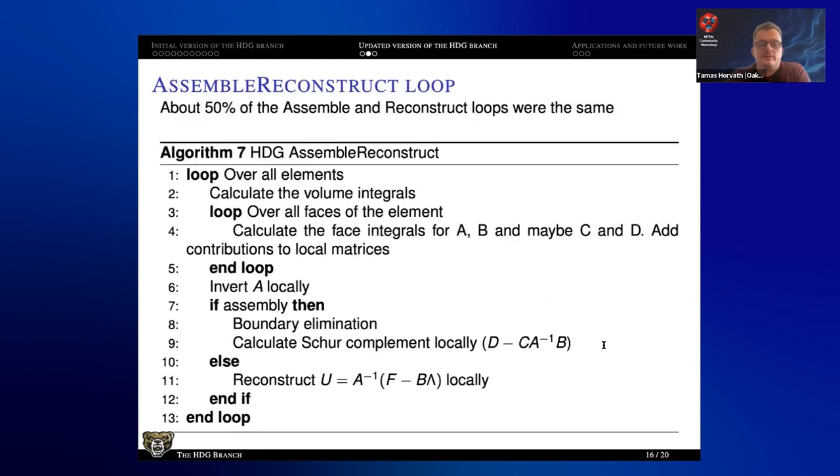So the idea with this assemble and reconstruct is that the beginning of the two functions were very similar. Loop over the elements, calculate the volume integrals, loop over the faces, and calculate certain face integrals. For the reconstruction, we don't need all four, only two, but that's not a big deal. And then we need to invert A locally. And then there is an if: are we doing the assembly? We calculate the Schur complement, otherwise reconstruct. So now the code is more compact, nicer, not necessarily more user friendly with the finite element spaces. It's a little bit complicated. And I know I need to add more documentation to it, but it's definitely more compact.